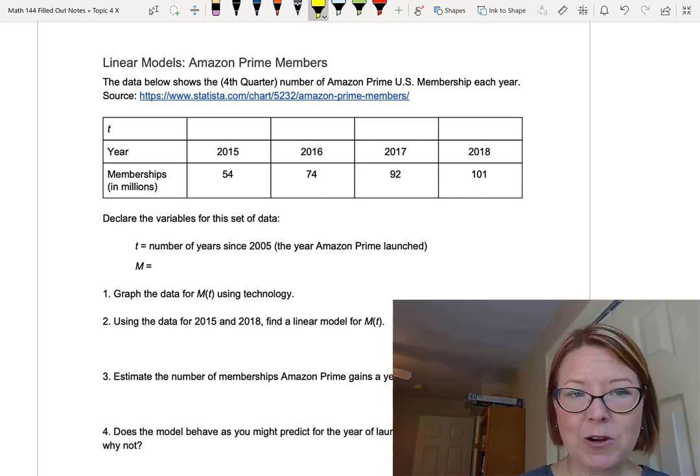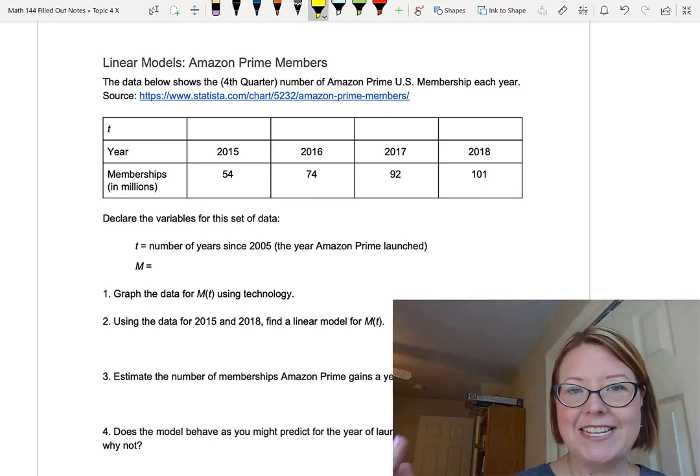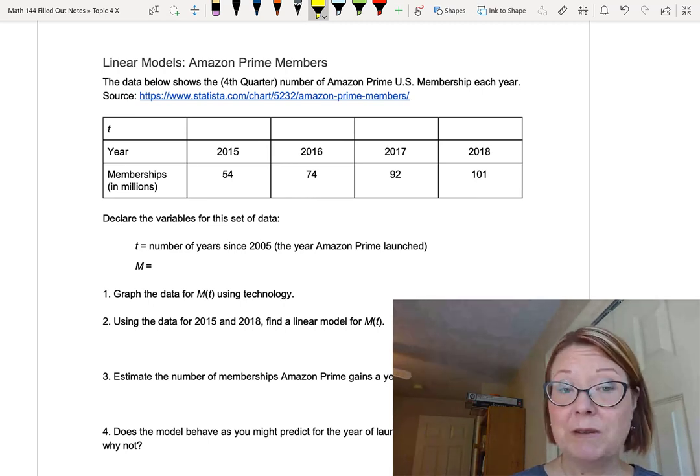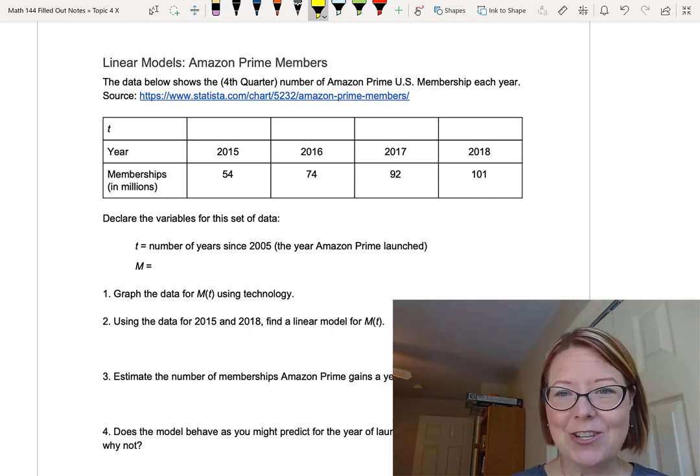The table has three rows. The first row is for T, that would be our re-indexed time, and that row is blank. We have the years 2015, 2016, 2017, and 2018, and then the membership in millions, which is 54, 74, 92, and 101.